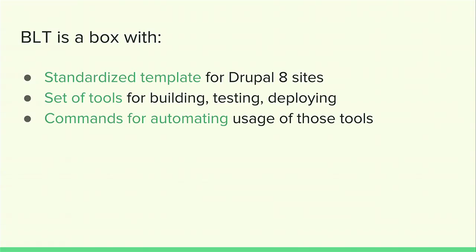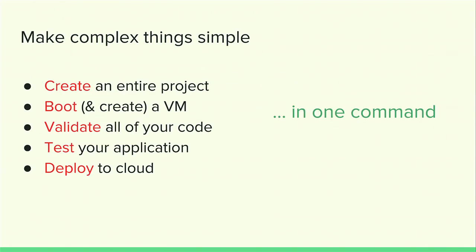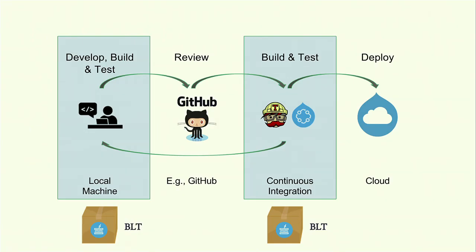Recap: BLT is a box with a logo on it, and it's got three things — a template, a set of tools, and commands that help you automate those tools. Those commands make complex things simple: one command each for creating a project, booting a VM, validating your code, testing your application, and deploying. The goal is to have a workflow where you're developing locally, you've got a review process, you've got a CI service built in that runs your BLT commands, and then you end up deploying to cloud.